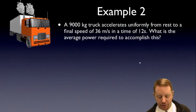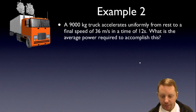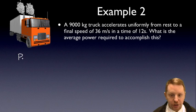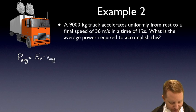A 9,000 kilogram truck accelerates uniformly from rest to a final speed of 36 meters per second in a time of 12 seconds. What is the average power required to accomplish this? Well, since it accelerates uniformly, we know it must have a constant acceleration. So, let's see what we can do here.